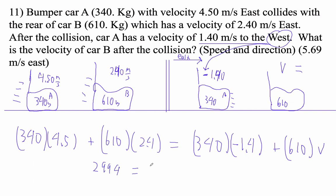So I'm going to go 340 times 4.5 plus 610 times 2.4. This whole side here is 2994. That equals 340. And then let's multiply this out. So 340 times negative 1.4 equals negative 476 plus 610V. So I multiplied. I did this whole side here. I get 2994. And then to get rid of this, I'm going to add it to both sides. So 2994 plus 476, and I get 3470 equals 610V.